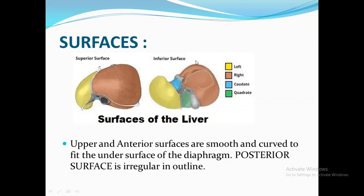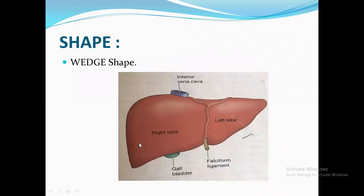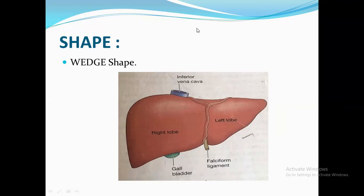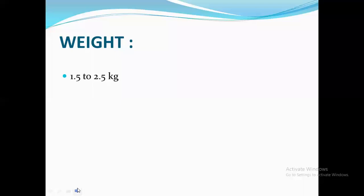The shape of the liver is wedge-shaped. The weight of the liver is 1.52 to 2.5 kg.